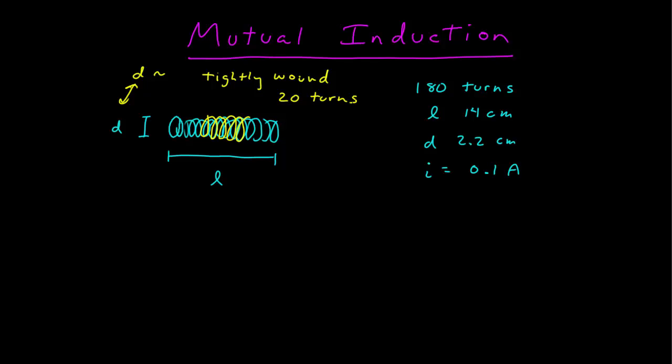If in fact the current is steady at 0.1 amps, the magnetic field is going to be steady and the magnetic flux will be steady. There will be no induced EMF at all because you need a changing magnetic flux to induce an EMF.